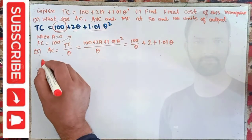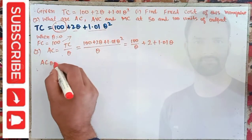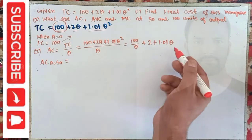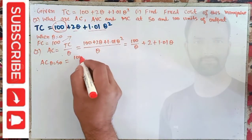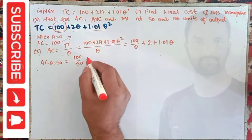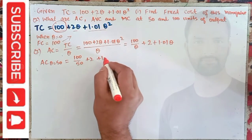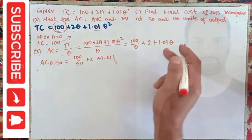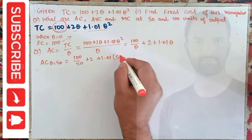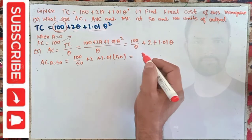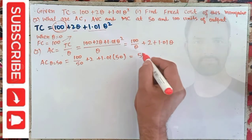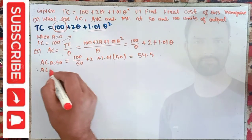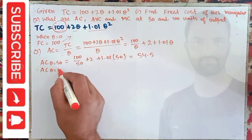Average cost when Q = 50: just plug Q = 50 into the AC equation. We have 100/50 + 2 + 1.01 × 50, which comes out to be 54.5.